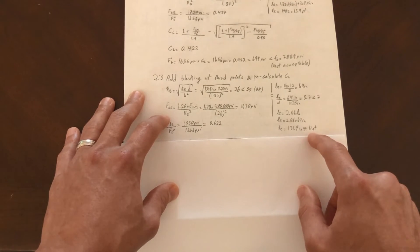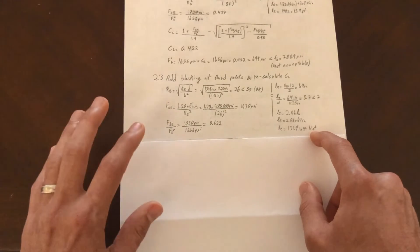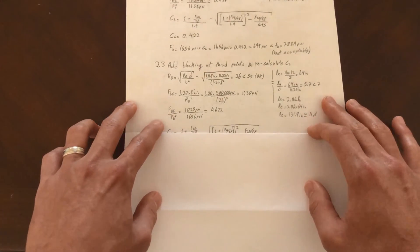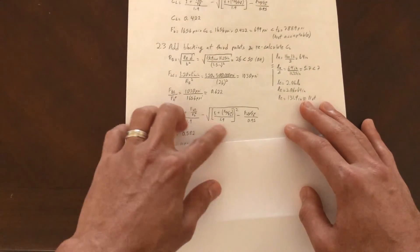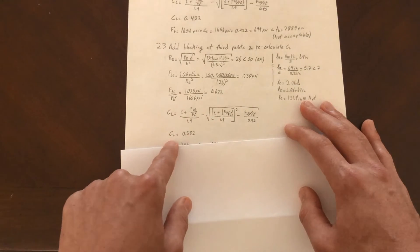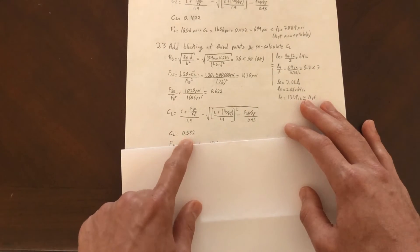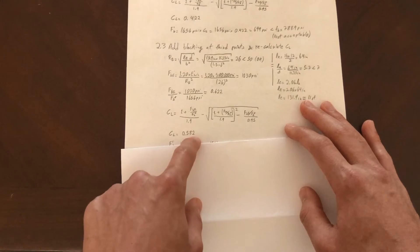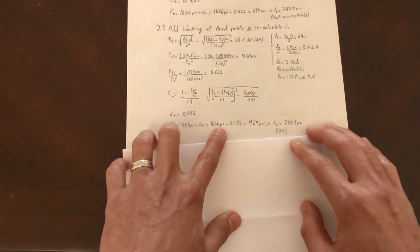Then we plug and chug everything back into the same equation, and then we get now C sub L equal to 0.582. When we calculate our capacity, boom, we are greater than our demand, so we are okay.